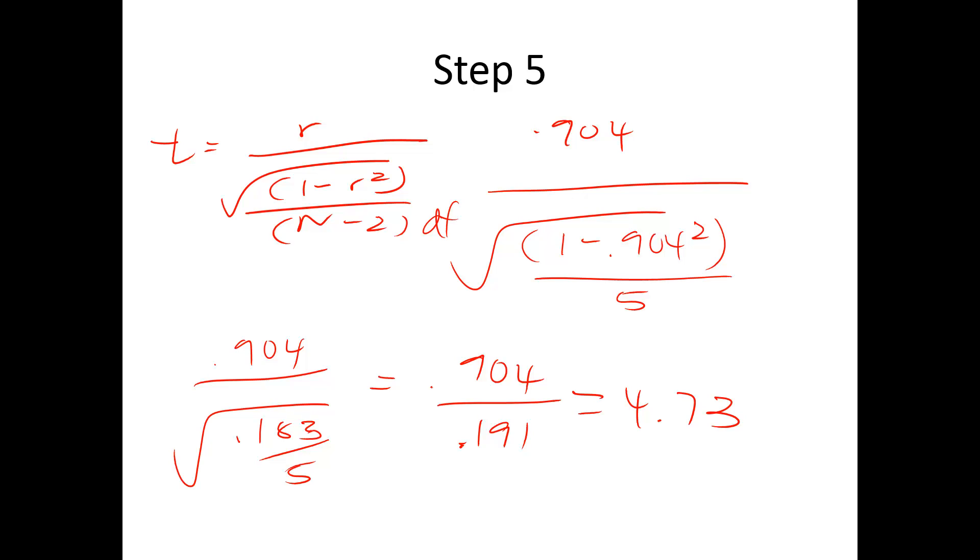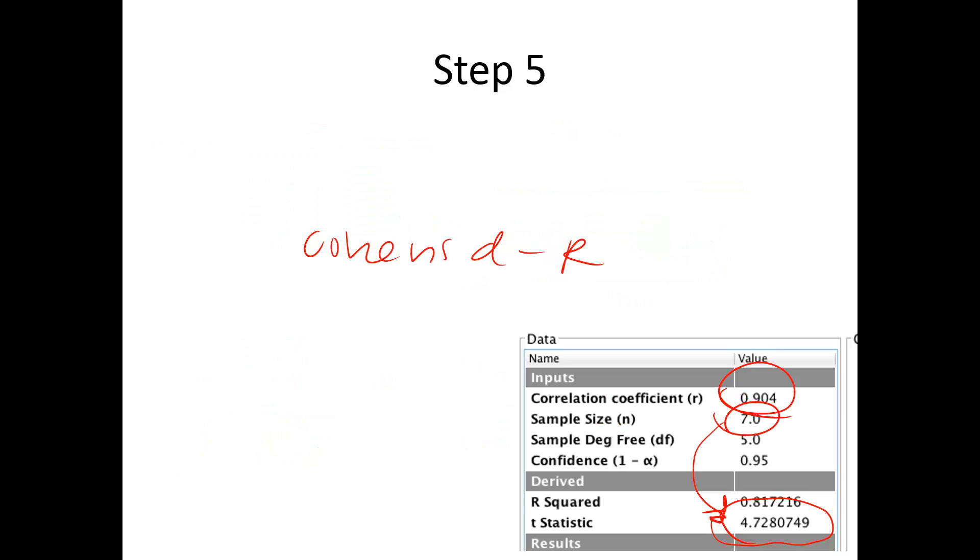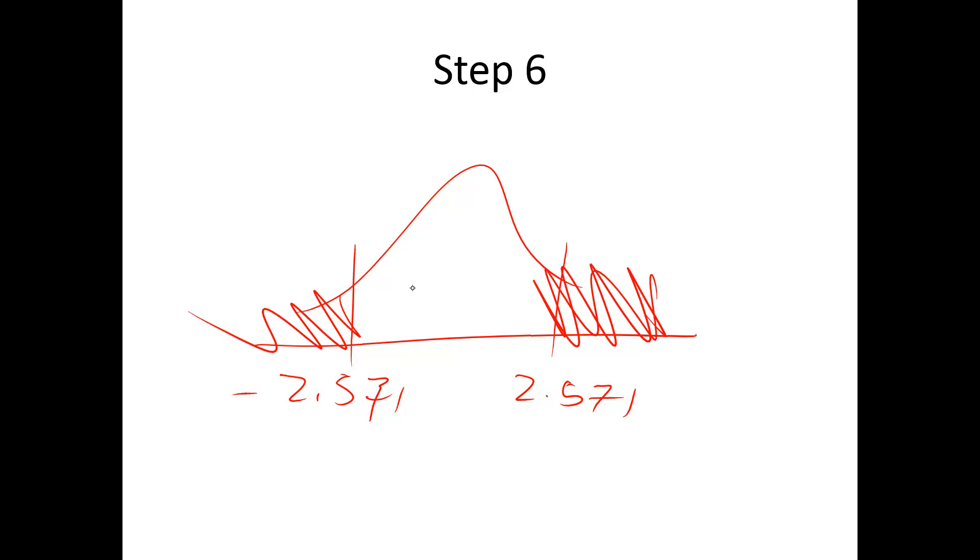So in step six, I want to know if 2.571, which is my cutoff or critical score, is further out than my other score. Fail here, reject out here. And our score was 4.73, so we would reject the null.